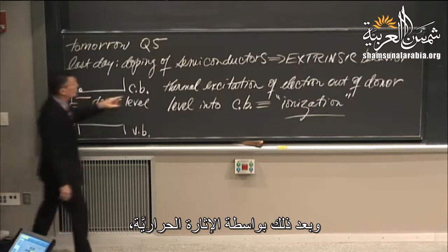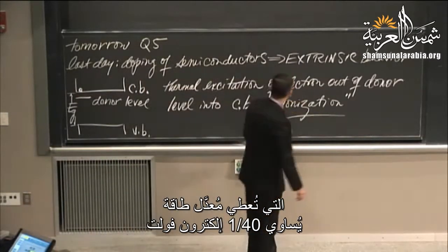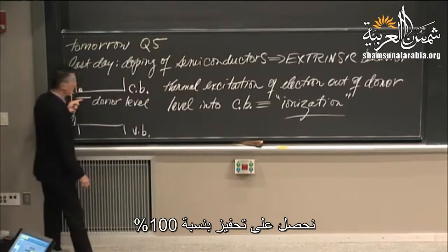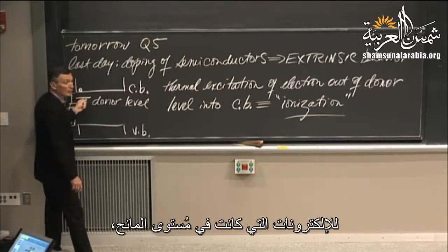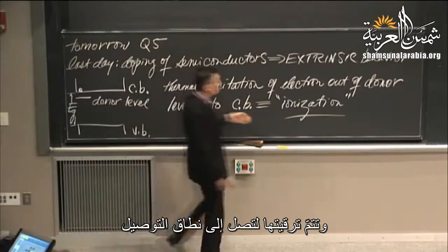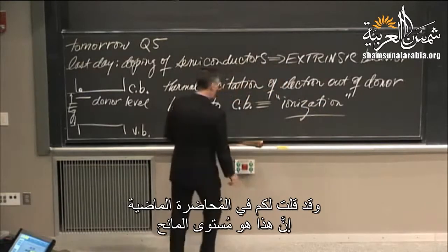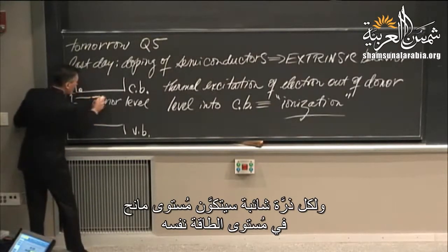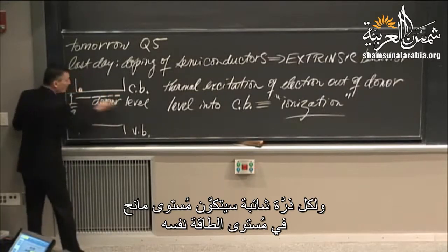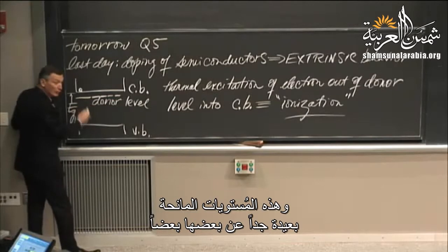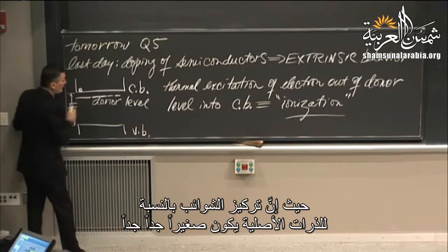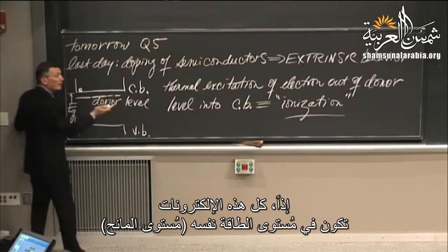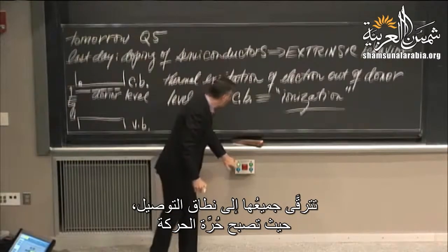Thanks to thermal excitation, which gives us an average energy of about a 40th of an electron volt, we get, for all intents and purposes, 100% excitation of the electrons that sit in the donor level, excitation up into the conduction band. This is what the electrical engineers term ionization. For each donor atom, there sits a donor level at the same value of energy. But these are so far apart owing to the dilute concentration of the impurity that we don't violate the Pauli exclusion principle. So these are all sitting at the same level, and a given temperature promotes all of them up into the conduction band where they are mobile.